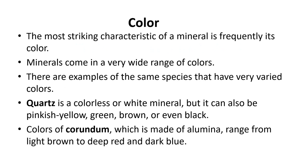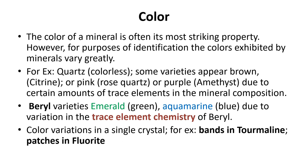What is color? The most striking characteristic of a mineral is generally its color. Minerals come in a very wide range of colors. We can see examples of the same mineral species having very varied color. For instance, quartz is colorless or white but can also appear pinkish, yellow, green, brown, or even black. Corundum, which is made up of alumina, ranges from light brown to deep red and dark blue.